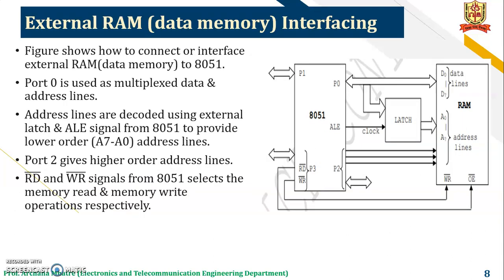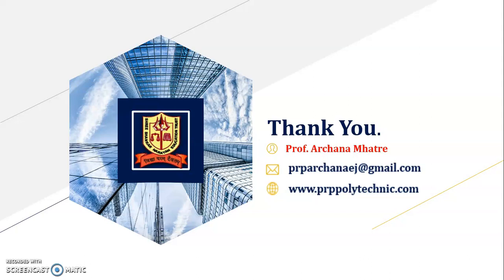Now, data memory RAM interfacing with 8051 microcontroller. Port 0 is used as multiplexed data and address lines. Address lines are decoded using an external latch and ALE signal from the 8051 to provide lower order A0 to A7 address lines. Port 2 carries the higher order address lines. RD bar and WR bar signals from port 3 select the memory read and memory write operations respectively. Thank you.